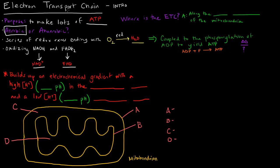Where is the electron transport chain? It's somewhere in the mitochondria, but specifically it's along the inner membrane, which I'll talk about in just a second when I get to this diagram. The electron transport chain is a series of redox reactions ending with going from oxygen to water, and that series of redox reactions is coupled to the phosphorylation of ADP to yield ATP, because we want to make ATP in the electron transport chain.